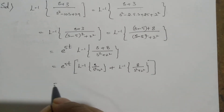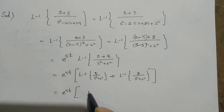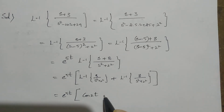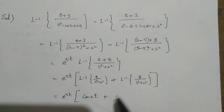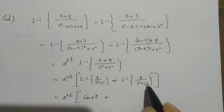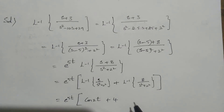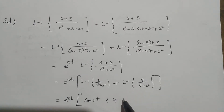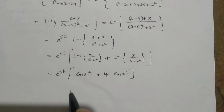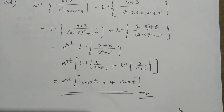So now what happens: this is e to the power of 5t times L inverse of s by (s squared plus 2 squared), which we know is cos(2t), plus L inverse of 8 by (s squared plus 2 squared), which gives 4 times sine(2t). So that we can write the final answer as e to the power of 5t times [cos(2t) plus 4 sine(2t)]. I hope it is clear to you.